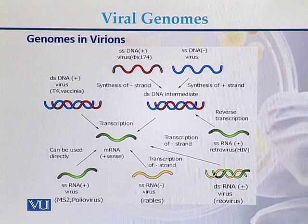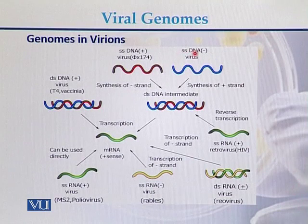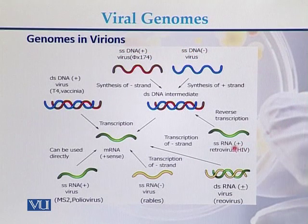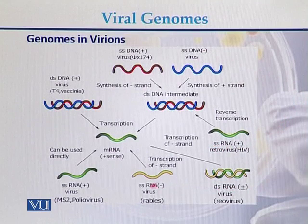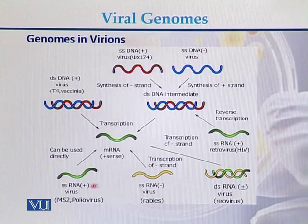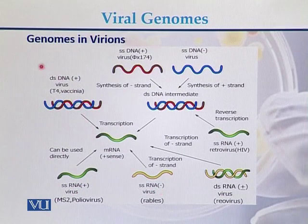Viral genomes can be single-stranded DNA with a positive strand, single-stranded DNA with a negative strand, single-stranded RNA, double-stranded RNA, single-stranded RNA with a positive strand, single-stranded RNA with a negative strand, or double-stranded DNA.